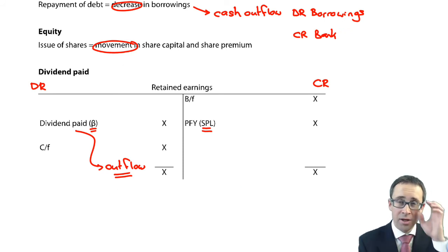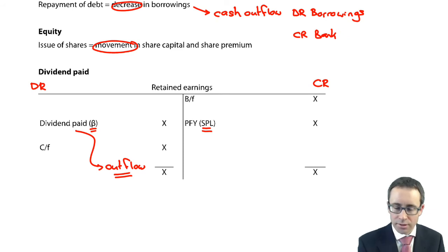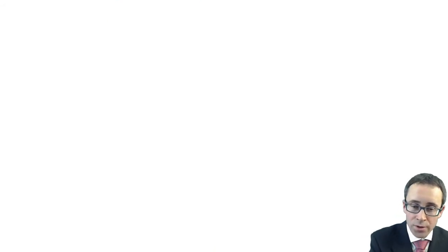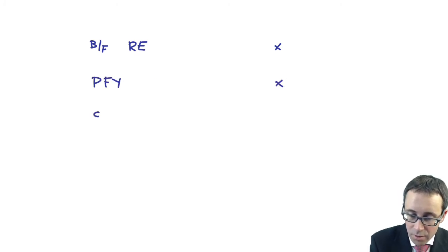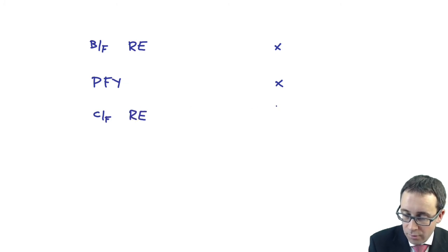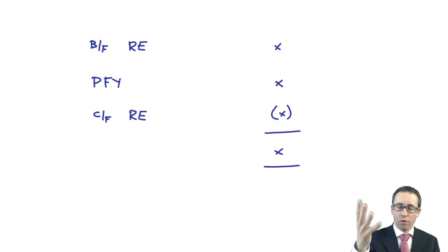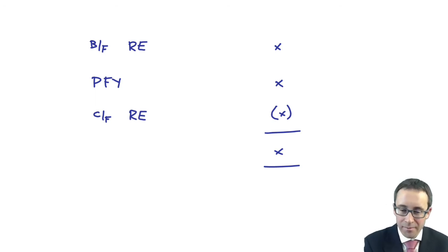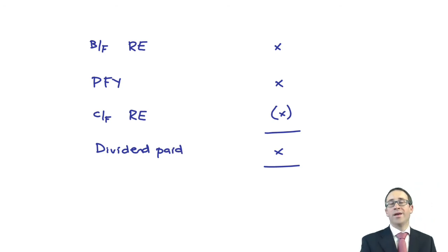If you don't like T accounts — well, you should be loving T accounts; you're training to be an accountant, and even as a management accountant you still need knowledge of T accounts. But if you don't like using T accounts, alternatively you could just take your brought forward retained earnings, add on your profit for the year, and then deduct your carry forward retained earnings. Because essentially that's what we're doing in the T accounts — we add up the right-hand side with the brought forward and the profit, then deduct the retained earnings carry forward to get the dividend paid. So: take your brought forward, add on the profit for the year, deduct the carry forward, and that will give you your dividend paid.